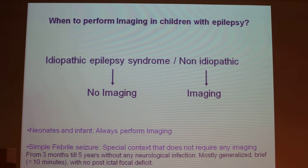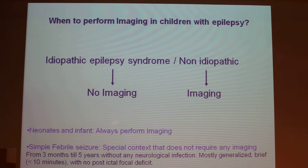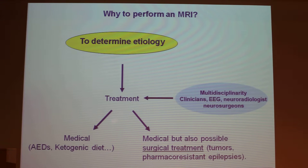In neonates and in infants, you always have to perform imaging because the clinical semiology is very hard to interpret. In simple febrile seizure, it is a special context that does not require any imaging — it is a very special context where you have a seizure from three months until five years old without any neurological infection. So, why perform MRI? It is very important to determine the etiology in order to have a good treatment.